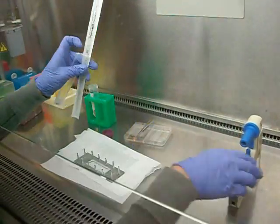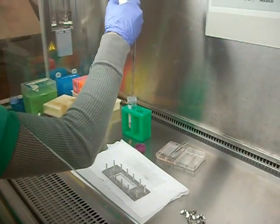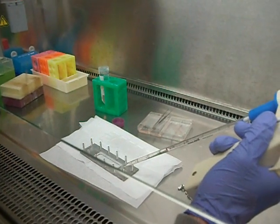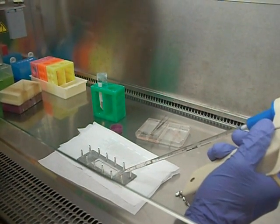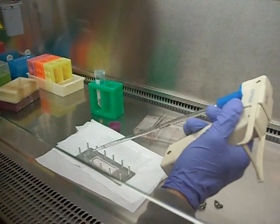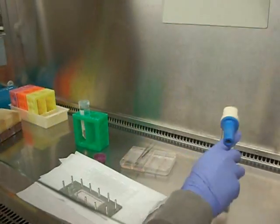Now that the gasket's on there, we need to go ahead and quickly add some media to the top of those cells. You want to do all this somewhat fast so that your cells don't dry out. Notice that I'm not adding the media directly to the top surface of the cells. I'm adding about 4 mils. That's more than enough.